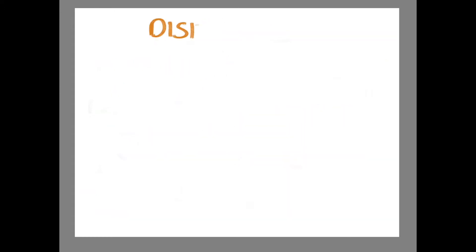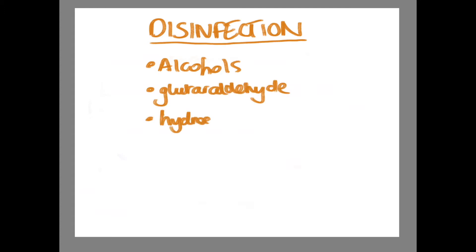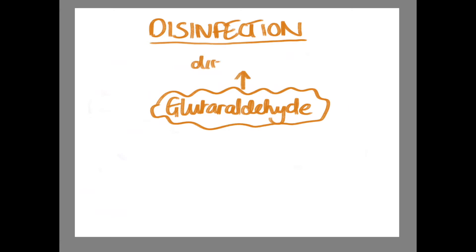Disinfection: Disinfectants are generally unable to remove microbiological spores. However, there are some higher level disinfectants, such as glutaraldehyde, that if left long enough will produce sterility. Disinfectants include alcohols, glutaraldehyde, and hydrogen peroxide. Glutaraldehyde is generally used for disinfecting endoscopes.